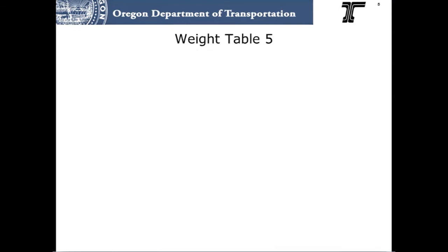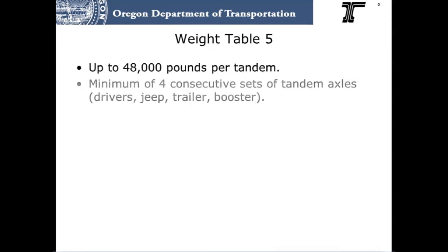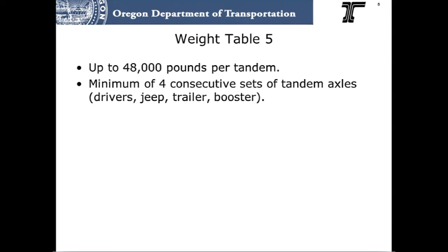Weight Table 5 permits allow up to 48,000 pounds on a tandem axle when hauling a single, non-divisible item. A minimum of four consecutive sets of tandem axles are required, typically drive axles, Jeep, trailer, and booster. These moves require a single trip permit issued by ODOT staff.